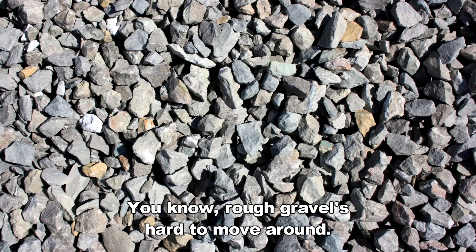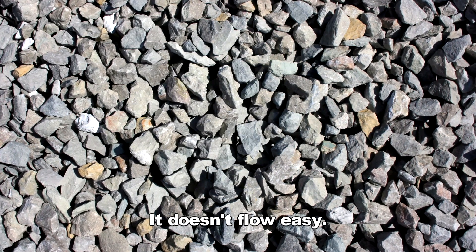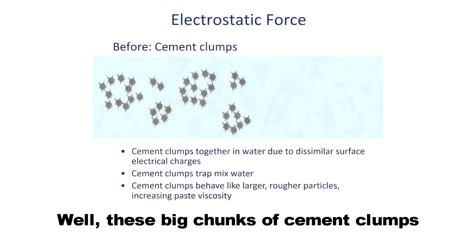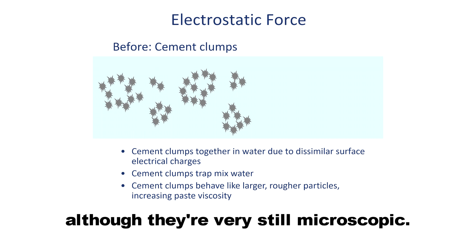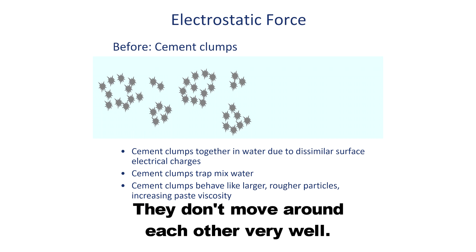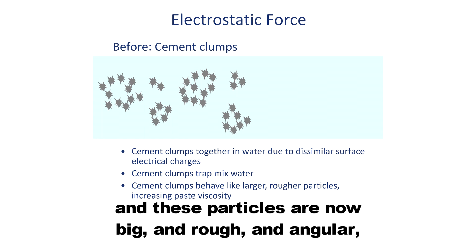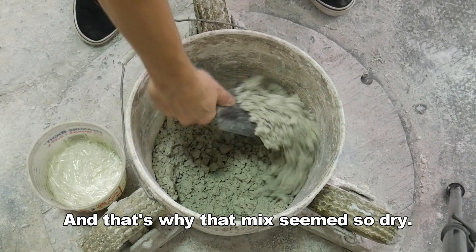Rough gravel is hard to move around — it doesn't flow easy. If you try to stick your hand in a pile of gravel, there's a lot of friction. These big chunks of cement clumps act like big chunks of gravel, although they're still microscopic. They don't move around each other very well. So you've lost some of your mixed water, or trapped it, and these particles are now big and rough and angular, and they don't move around each other.